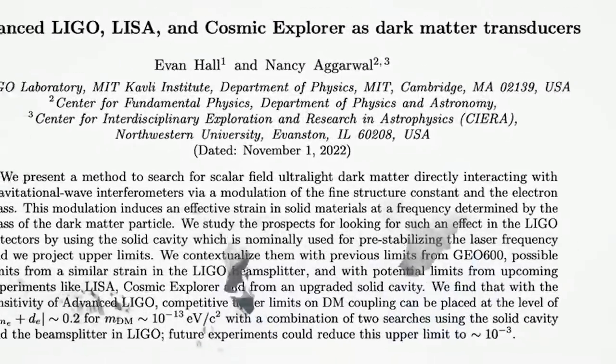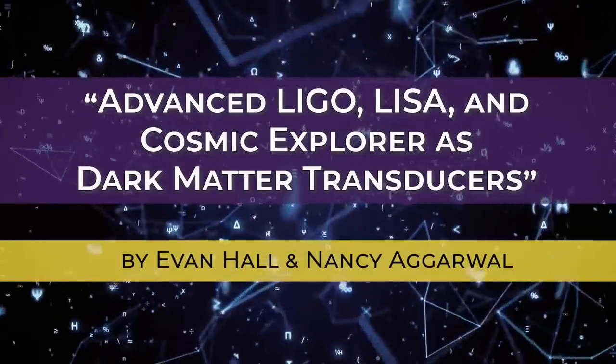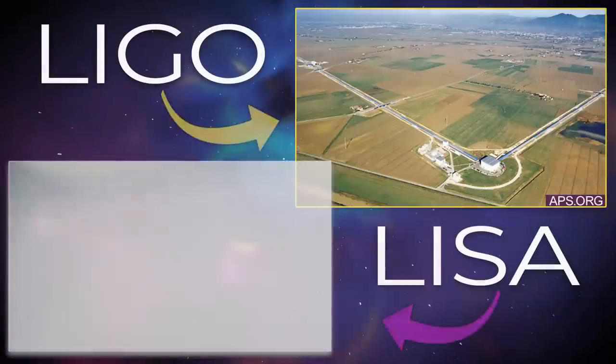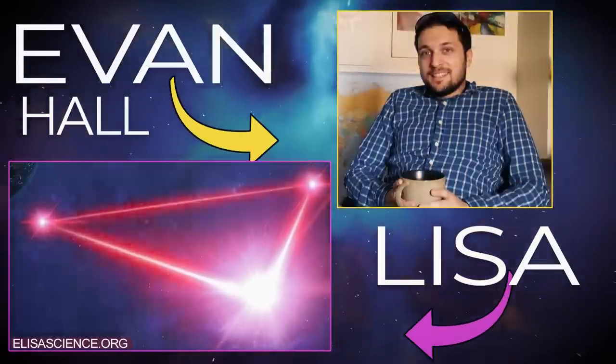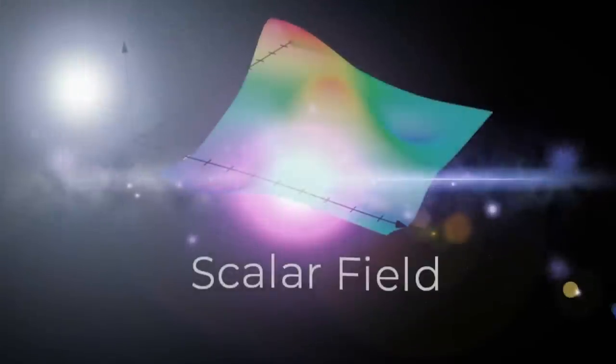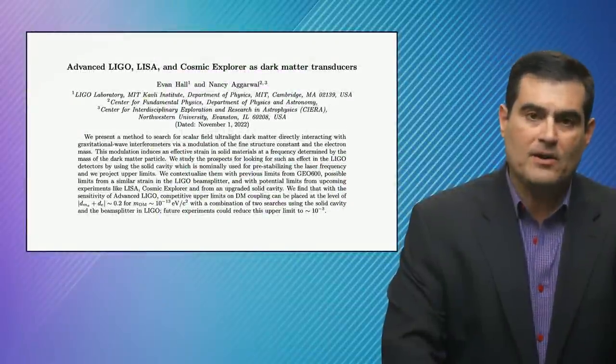We're going to be discussing this paper, which describes advanced LIGO and LISA, a future space-born version of LIGO, as ways to detect dark matter by Evan Hall and Nancy Agarwal. This is looking for what's called a scalar field, ultralight dark matter candidate, which have become popular.